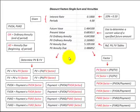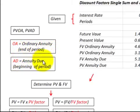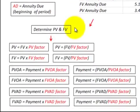Here I'm going to show you the formulas for determining those discount factors and how you can use them to determine present values and future values. The suffix OA stands for ordinary annuity, meaning payments are at the end of the period, and AD stands for annuity due, meaning payments are at the beginning of the period. For example, PVOA is the present value of an ordinary annuity, and PVAD is the present value of an annuity due.